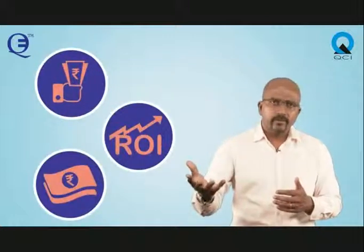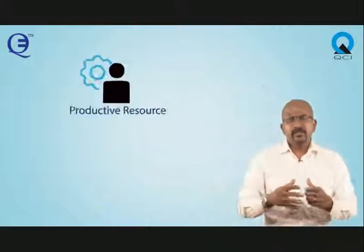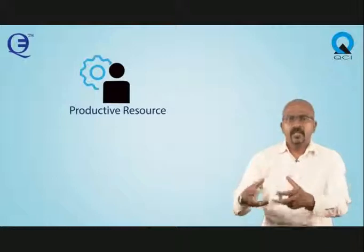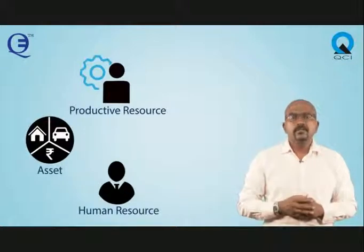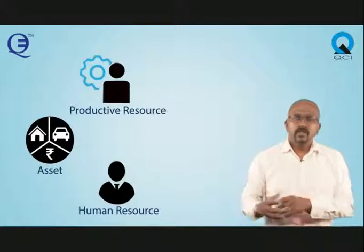Since the performance measurements of the company — profit, ROI, and cash flow — cannot be easily converted into local performances, people use local performance measurements thinking that they link to company performance very well. One such measurement is called utilization — utilization of a resource. It could be a productive resource, an asset, a human resource, or a support function.